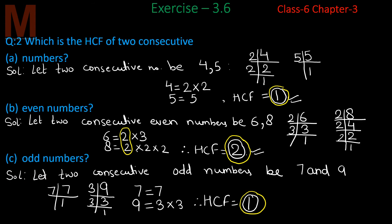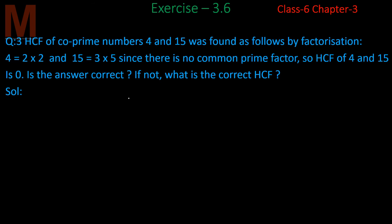Now let's solve question number 3. The HCF of 4 and 15 was found by factorization as follows: 4 = 2 × 2 and 15 = 3 × 5. Since there is no common prime factor, the HCF of 4 and 15 is stated to be 0. Is the answer correct? If not, what is the correct answer?